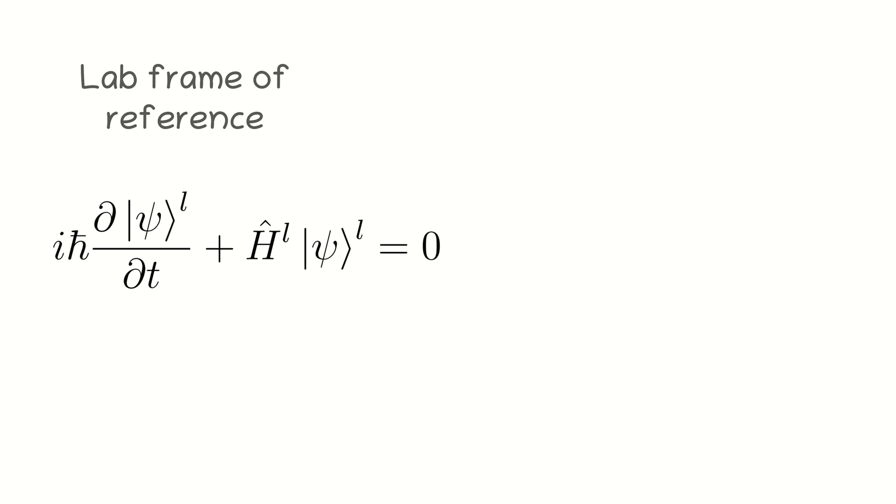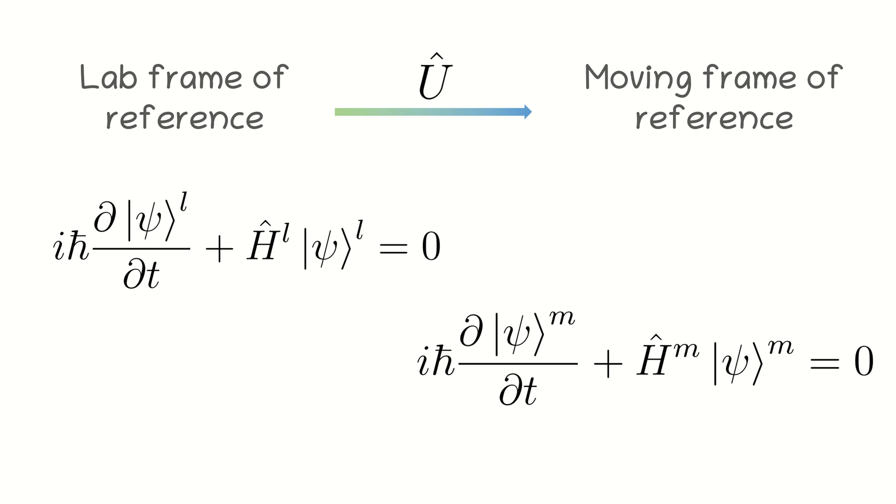So, we have a Hamiltonian in the laboratory frame of reference. We denote it as H with the superscript L. We want to move to a moving frame of reference whose motion is described by the evolution operator U and find an appropriate expression for the Hamiltonian. We denote it as H with the superscript M.